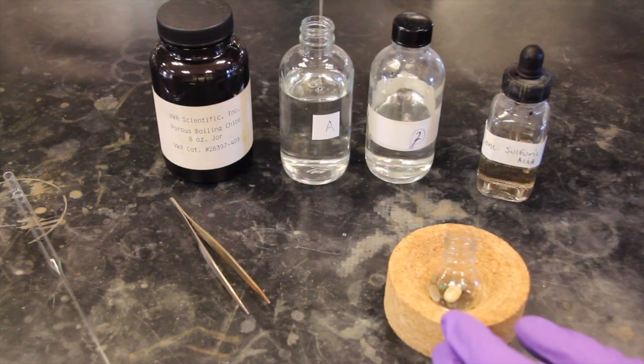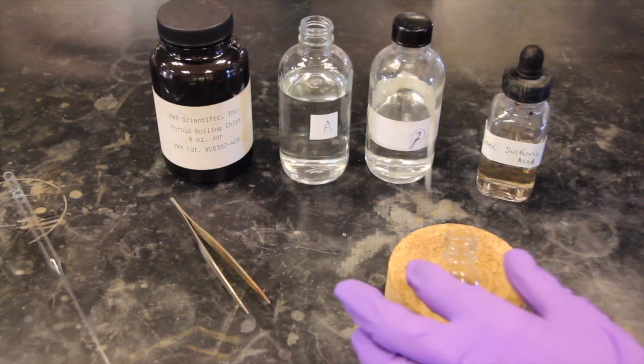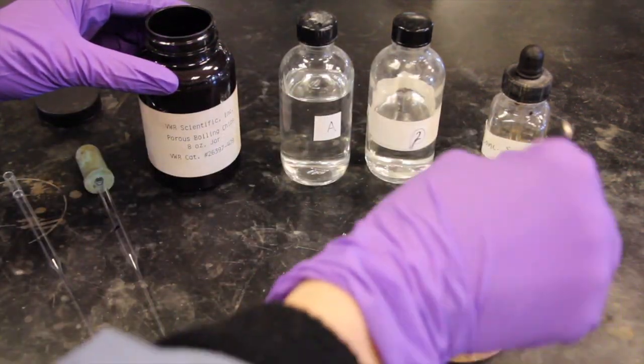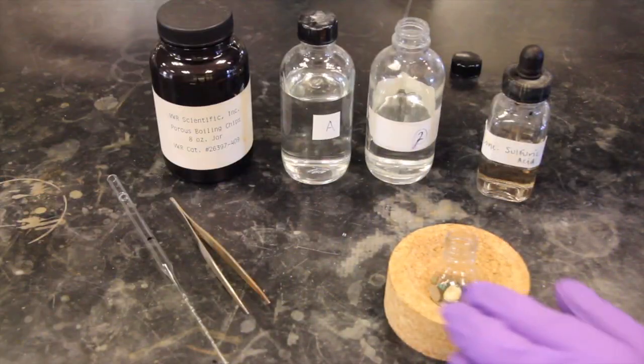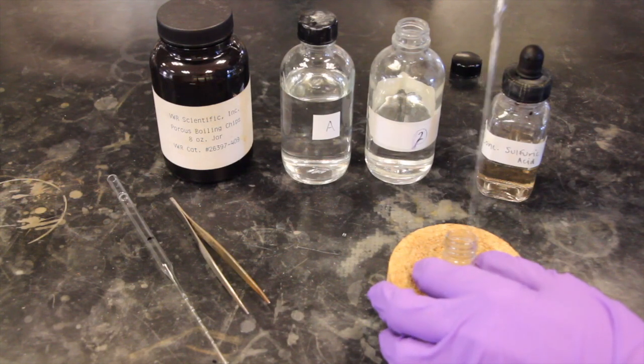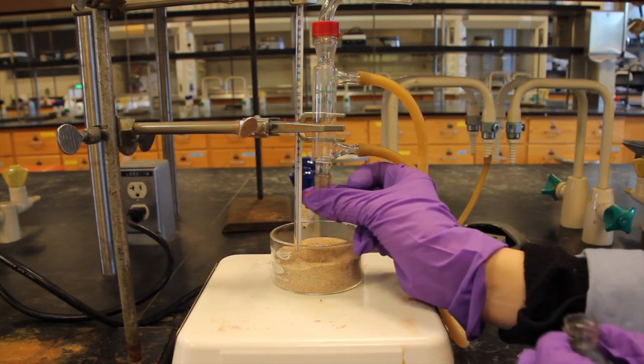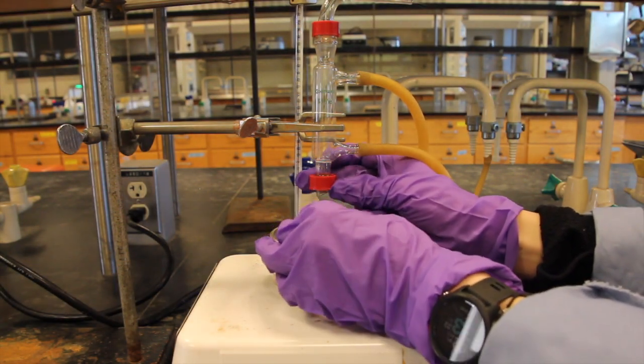Next, add 1 milliliter of your assigned alcohol to your 10 milliliter round-bottom flask. Add boiling chips to the round-bottom, as well as 2 milliliters of your assigned carboxylic acid. Finally, add 4 drops of concentrated sulfuric acid to the round-bottom, cap it, and reattach the round-bottom to the reflux apparatus at your workspace.